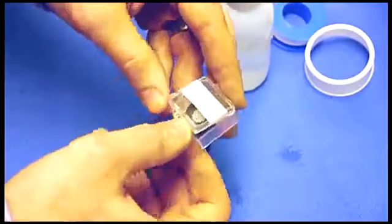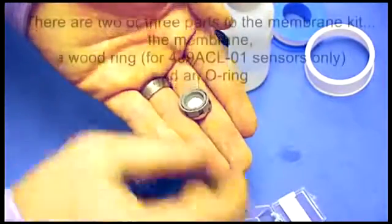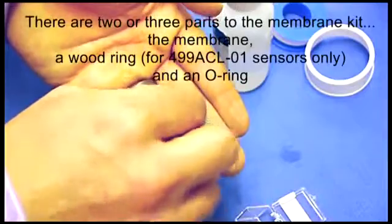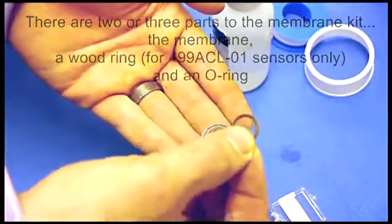Get a membrane kit and open it up. It'll have three distinct parts: it'll have the membrane head, it'll have a wood ring, and it'll also have an o-ring.